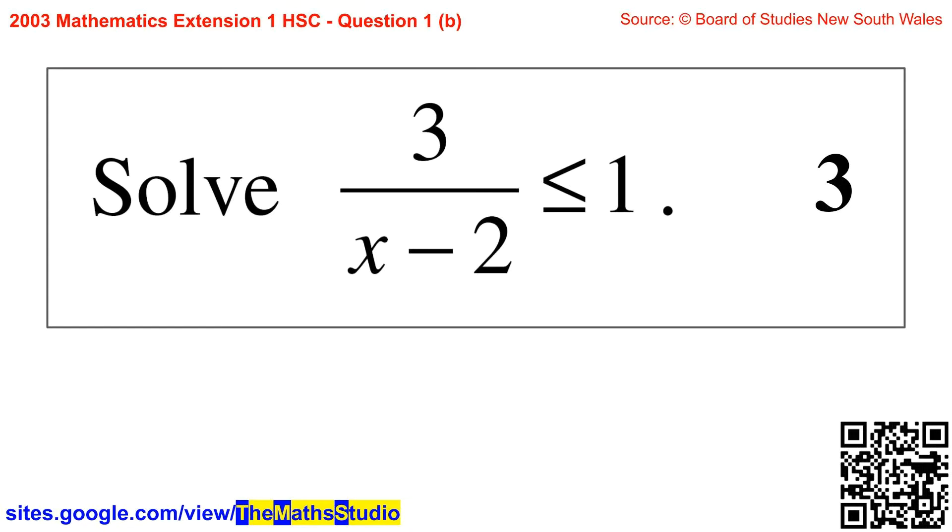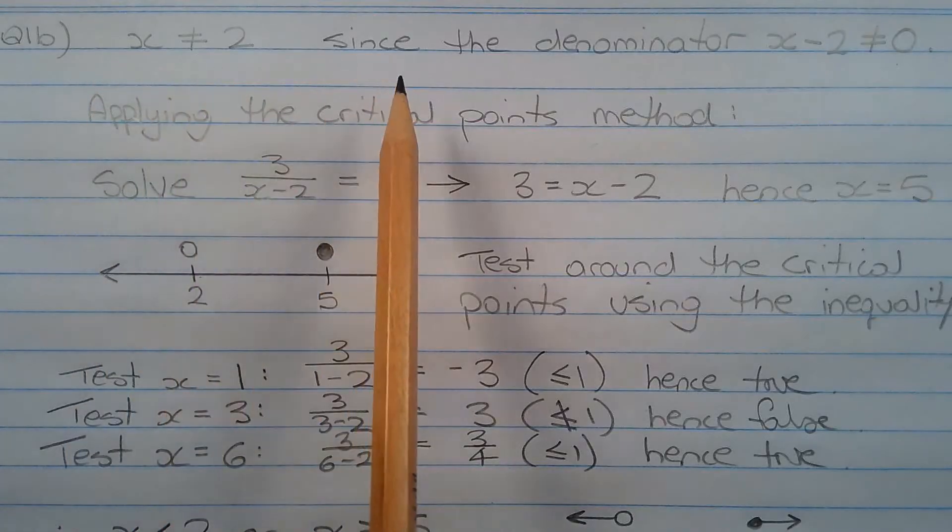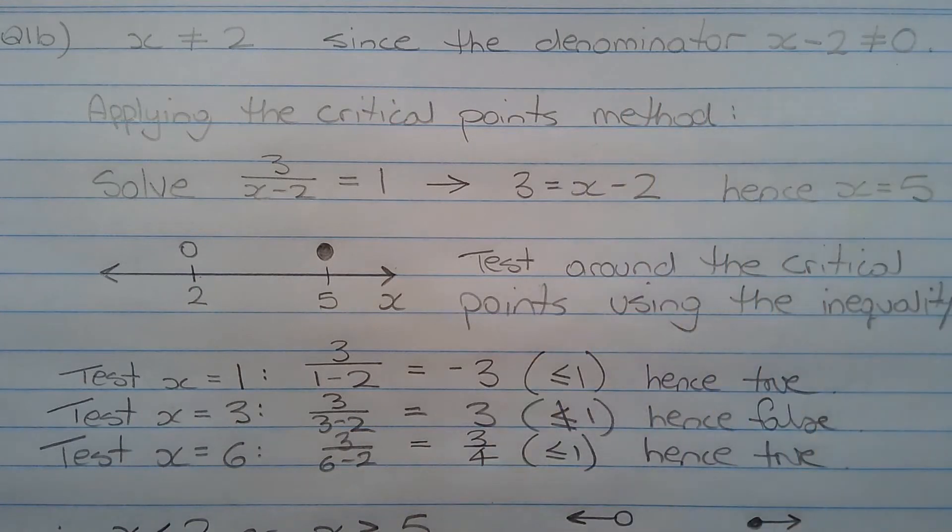Question 1b. Solve 3 over x minus 2 less than or equal to 1. Firstly, x cannot equal 2 since the denominator x minus 2 cannot equal 0.